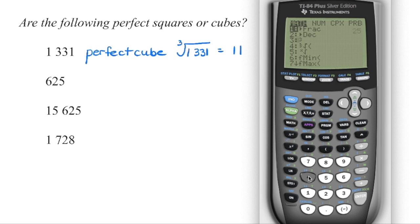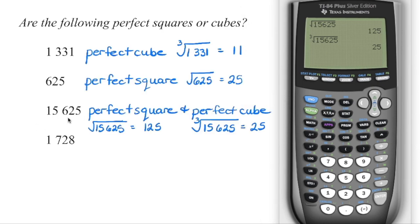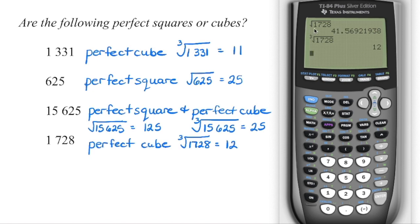And then let's go into the math menu. We're going to go down to number four, let's try 625, and that's irrational. So 625 is not a perfect cube, but it is a perfect square. 15,625 we can see is both a perfect square and a perfect cube, both of those are whole numbers, and 1728 is going to be a perfect cube.